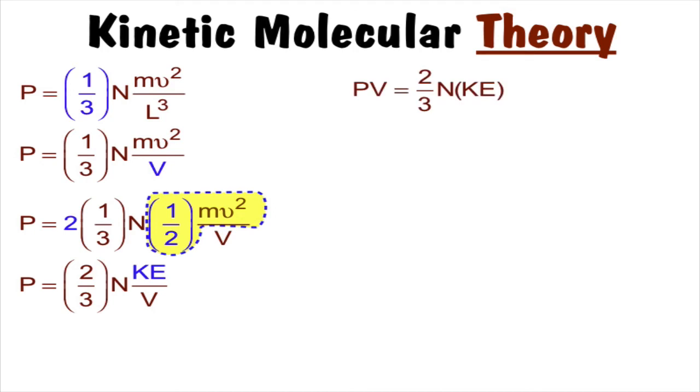So PV is equal to two-thirds N times the kinetic energy. So two-thirds the number of molecules times their kinetic energy is equal to nRT. That was the ideal gas law. Remember PV equals nRT.